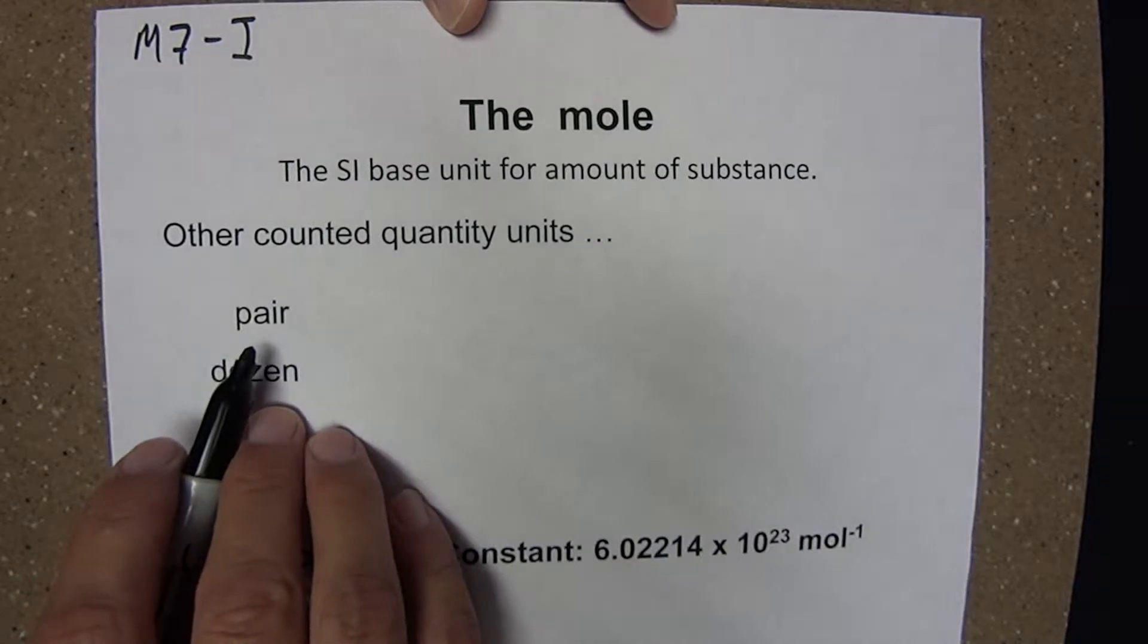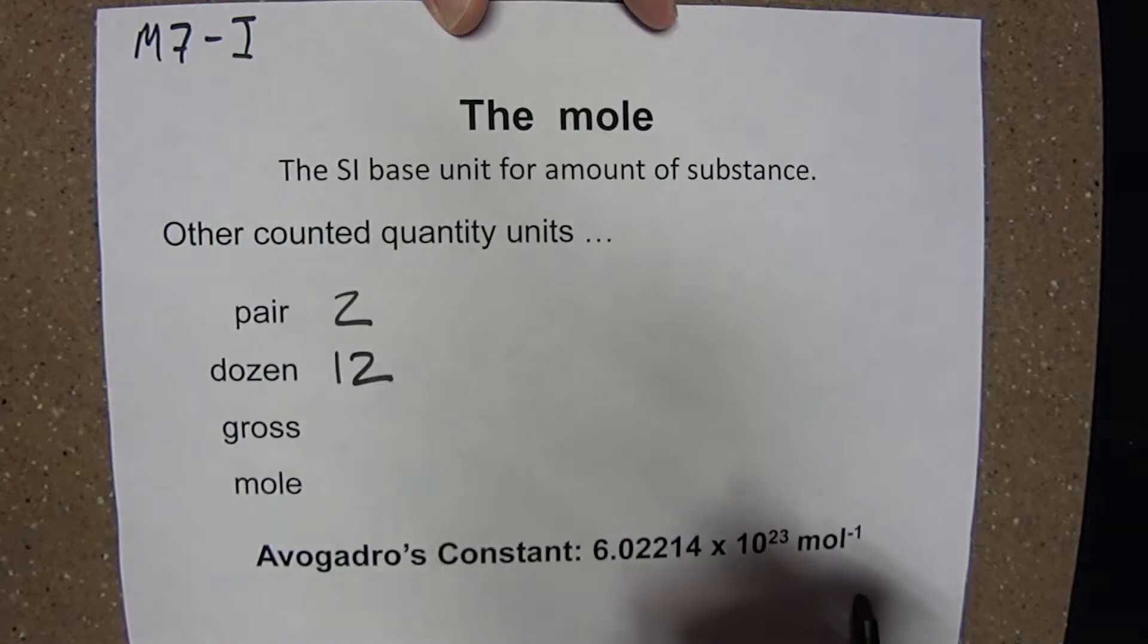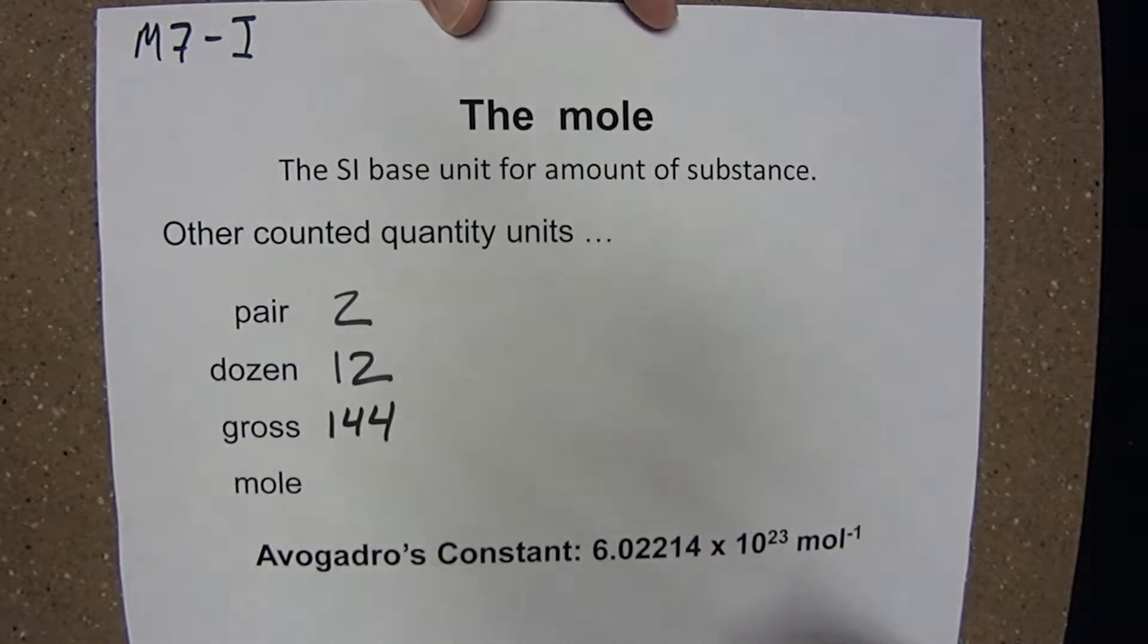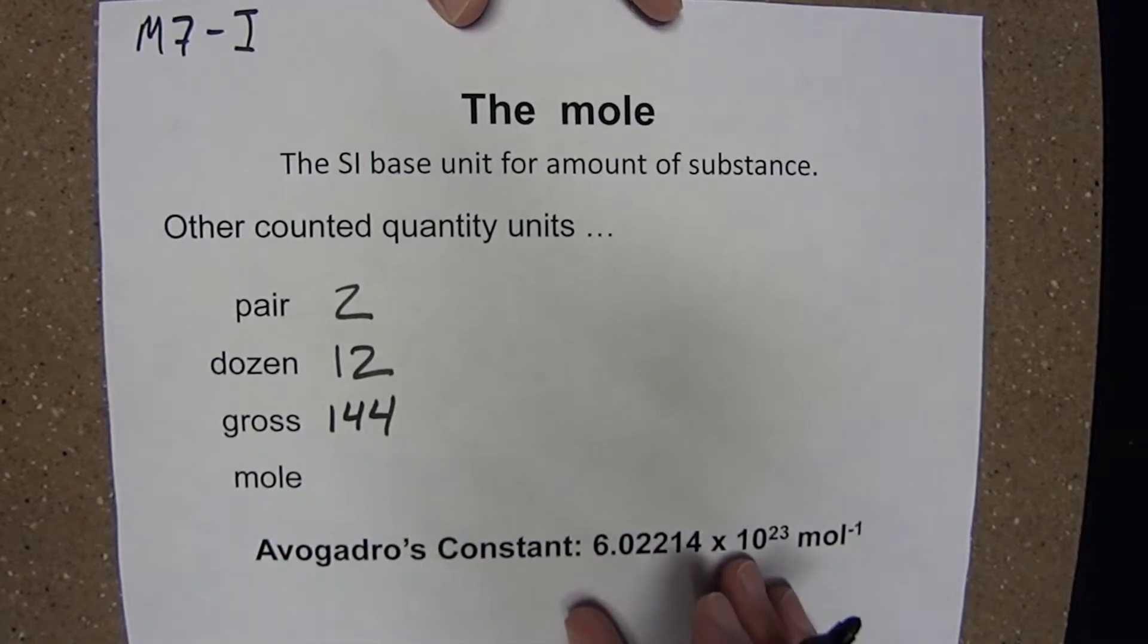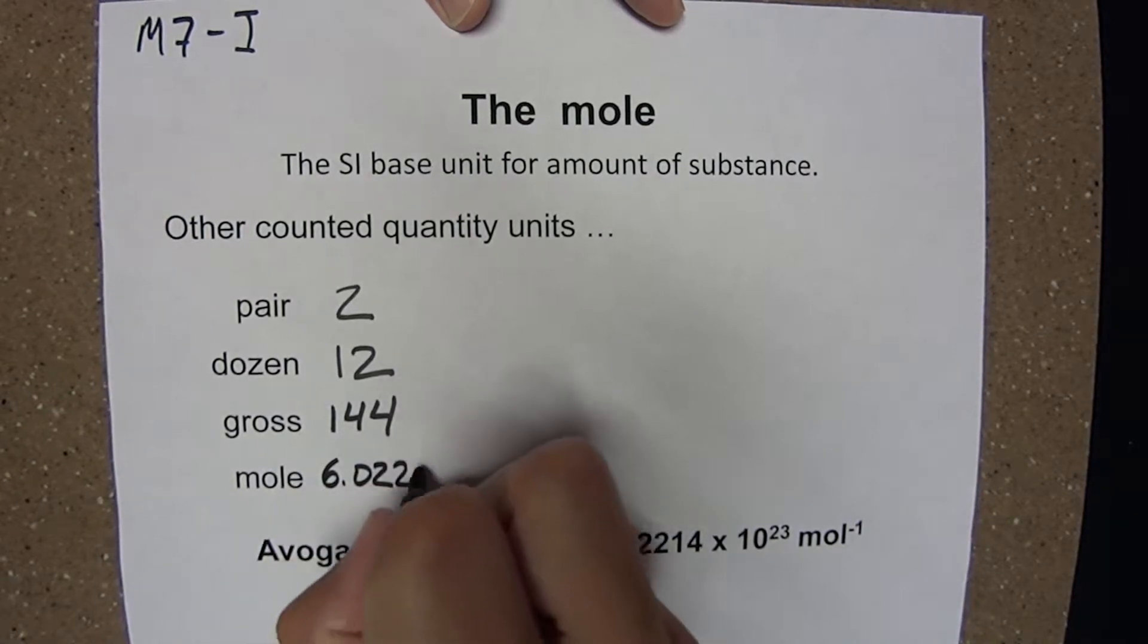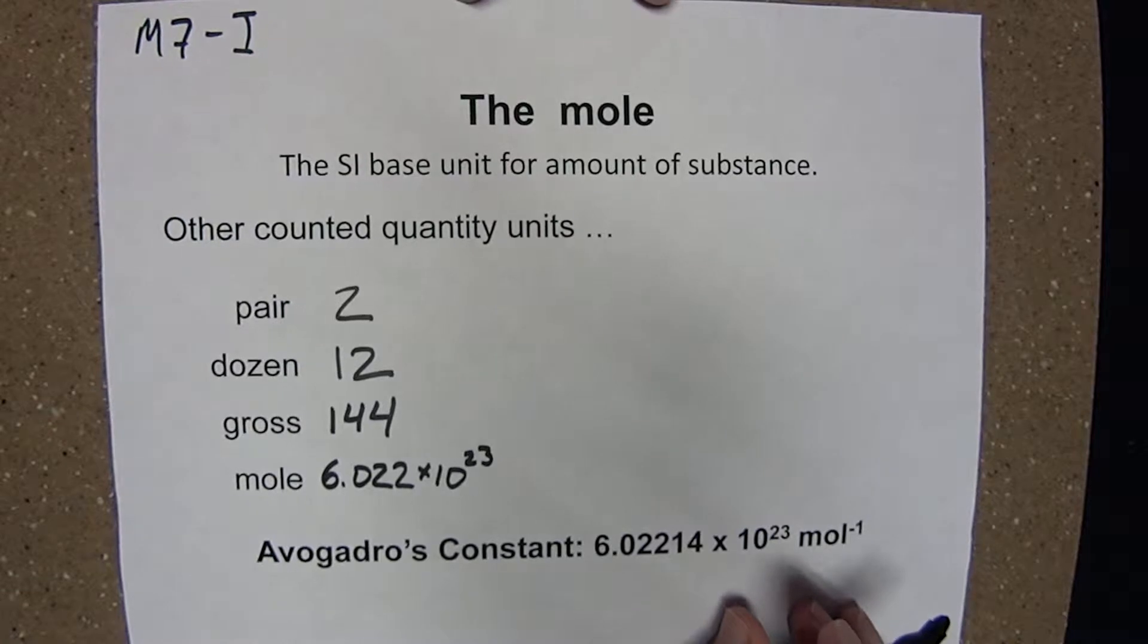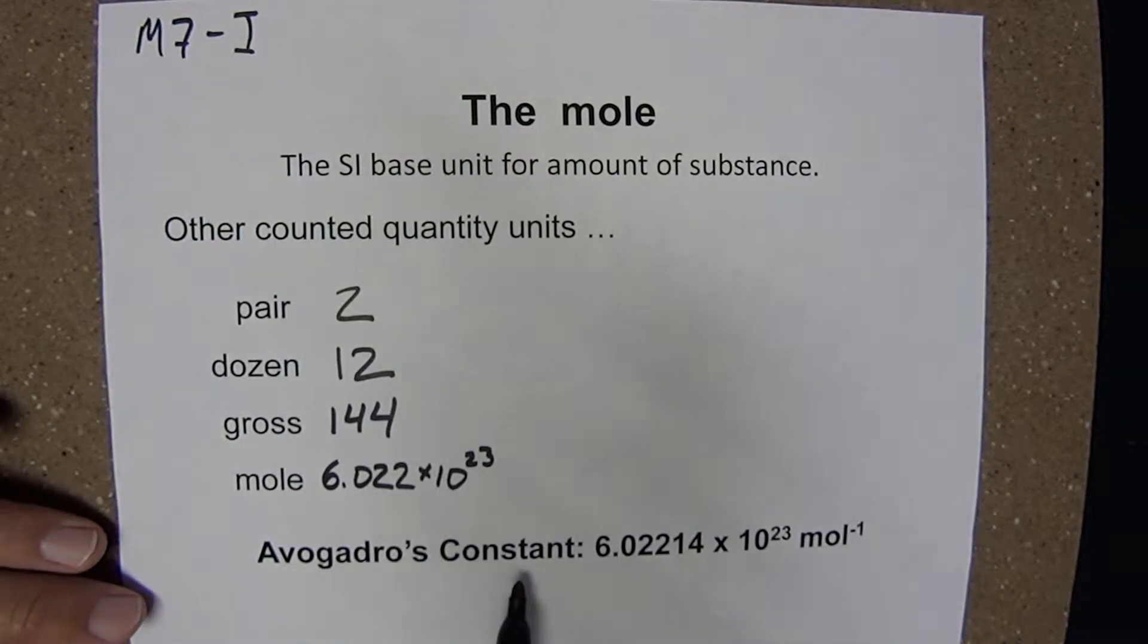Pair. Well, what did pair mean? It meant two. A dozen means twelve. A gross means 144. A mole is a much, much larger counted quantity. It is 6.022 times 10 to the 23. And this value is Avogadro's constant.